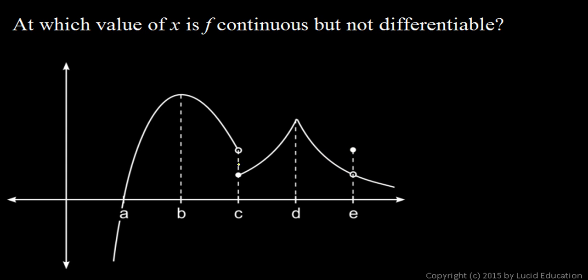At point c, the function is not continuous because there's a jump discontinuity right there. The left and right limits are not equal to each other at point c.